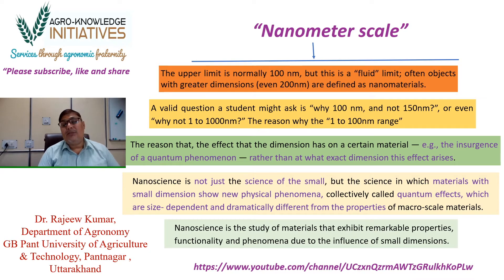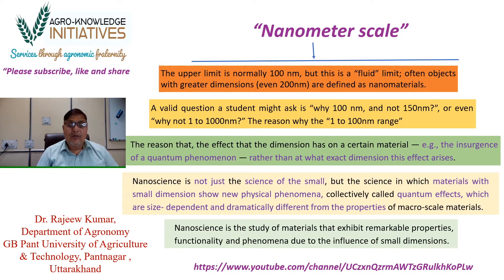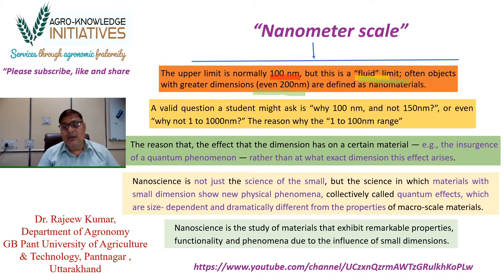Now we need to discuss the maximum limit of nanoscale, which is very important to understand. As stated earlier, the maximum nanoscale generally occurs in the range of 1 to 100 nanometers. But in some cases it goes beyond 100 nanometers, and in some literature you can find it is up to 1000 nanometers. We will discuss in the future why it is 1000 nanometers.